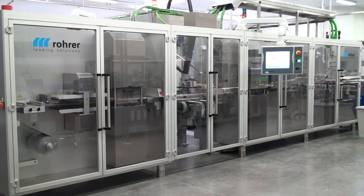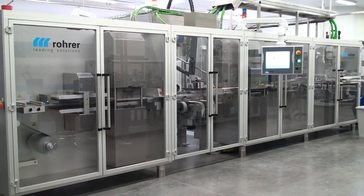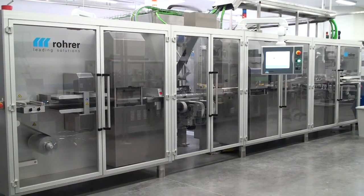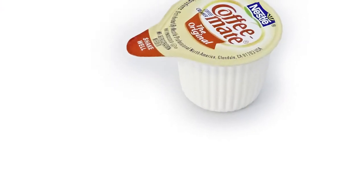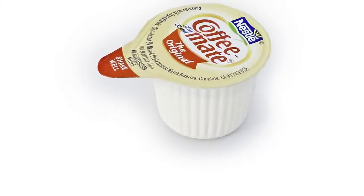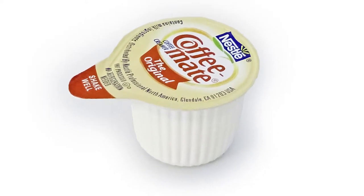The know-how and products of Rohrer are successfully in place worldwide. In the USA, the worldwide largest lines for coffee creamer cups produce over 250,000 cups per hour.